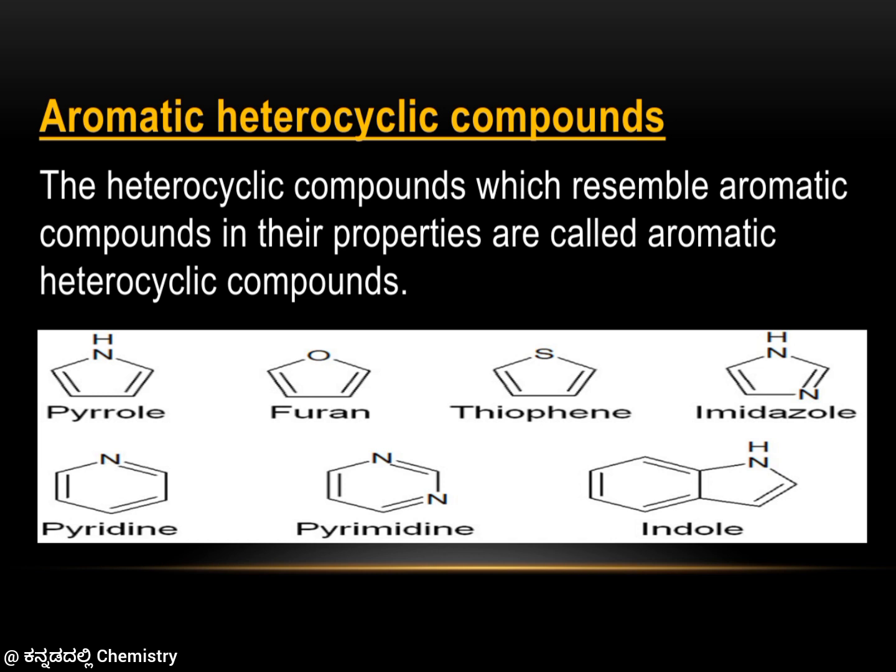Aromatic heterocyclic compounds have a ring with carbon atoms, at least one heteroatom, and double bonds present. Examples include Pyrrole, Furan, Thiophene, Imidazole, Pyridine, Pyrimidine, and Indole.